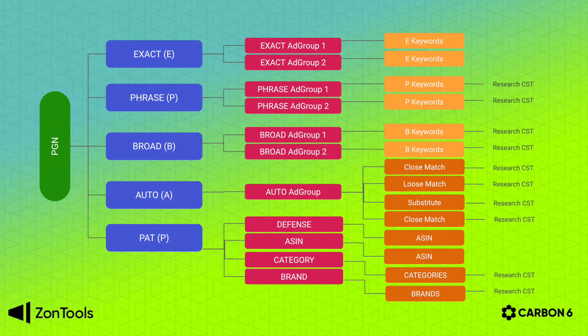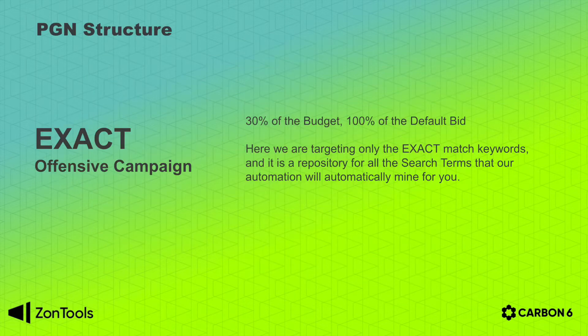Now let's cover these five entities one by one. The exact campaign is an offensive campaign that attacks other keywords and we will use 30% daily allocated budget and 100% of the default bid. Here we will be targeting only the exact match keywords and it will be a repository for your initial set of keywords, as well as for any search term that our automation will identify as profitable and mine in automation for you.